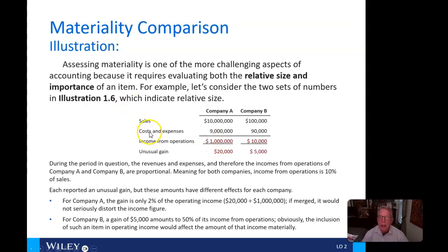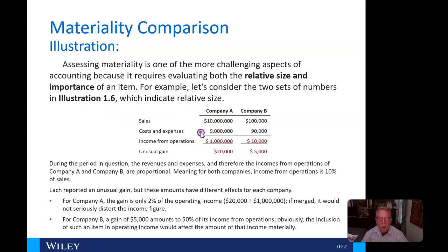Let's look at an illustration assessing materiality — one of the more challenging aspects of accounting — because it requires evaluating both relative size and importance. Consider two sets of numbers: Company A has sales of $10 million, costs of $9 million, and income from operations of $1 million. Company B has sales of $100,000, costs of $90,000, and income of $10,000. An unusual gain of $20,000 compared to $1 million is very different from a $5,000 gain compared to $10,000 in income from operations.